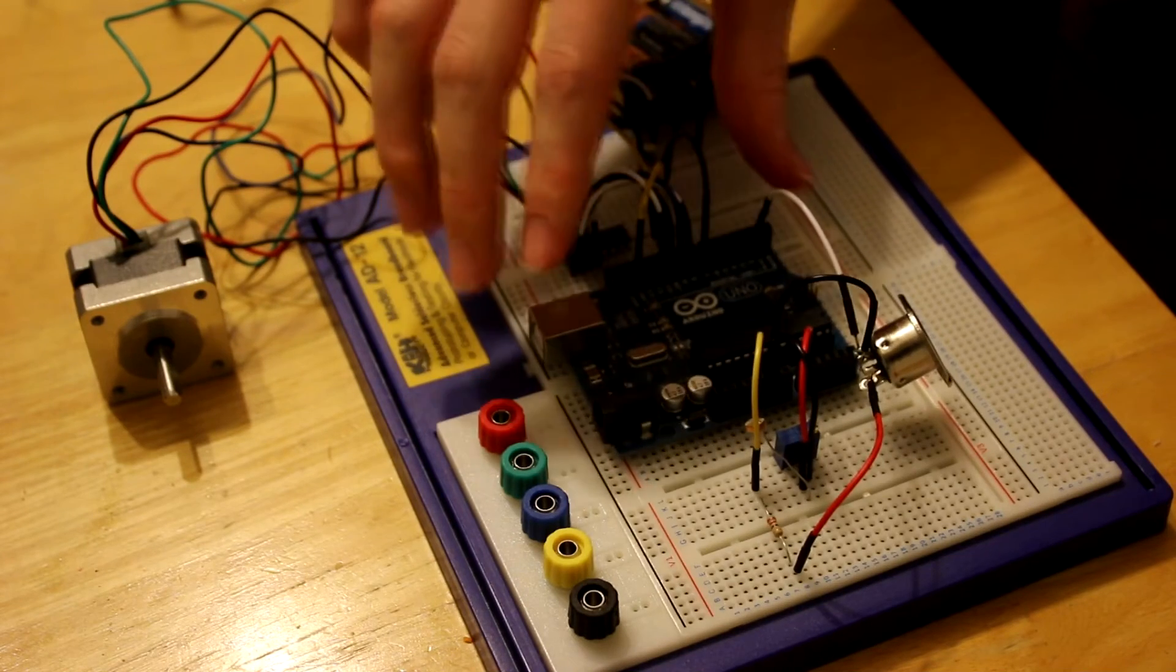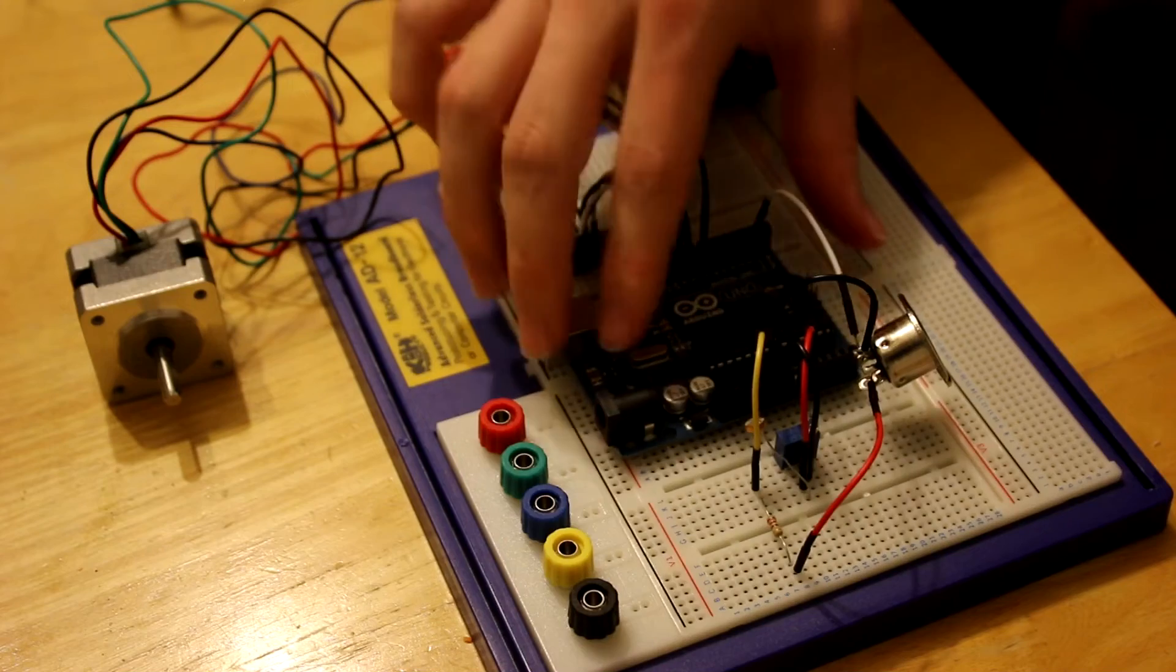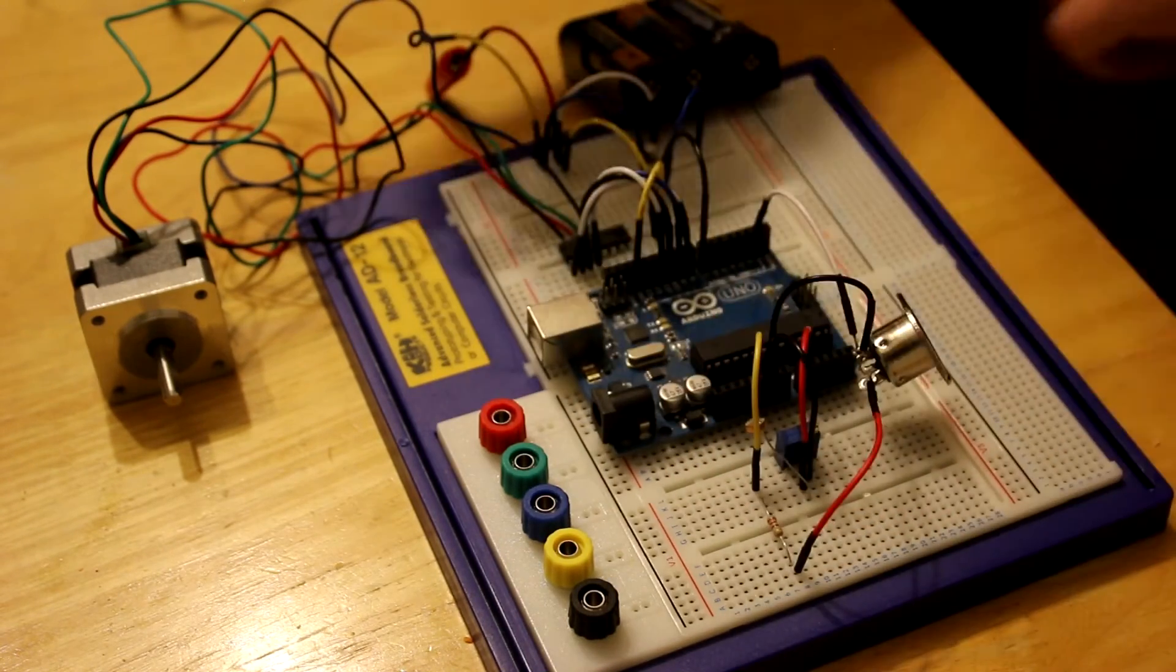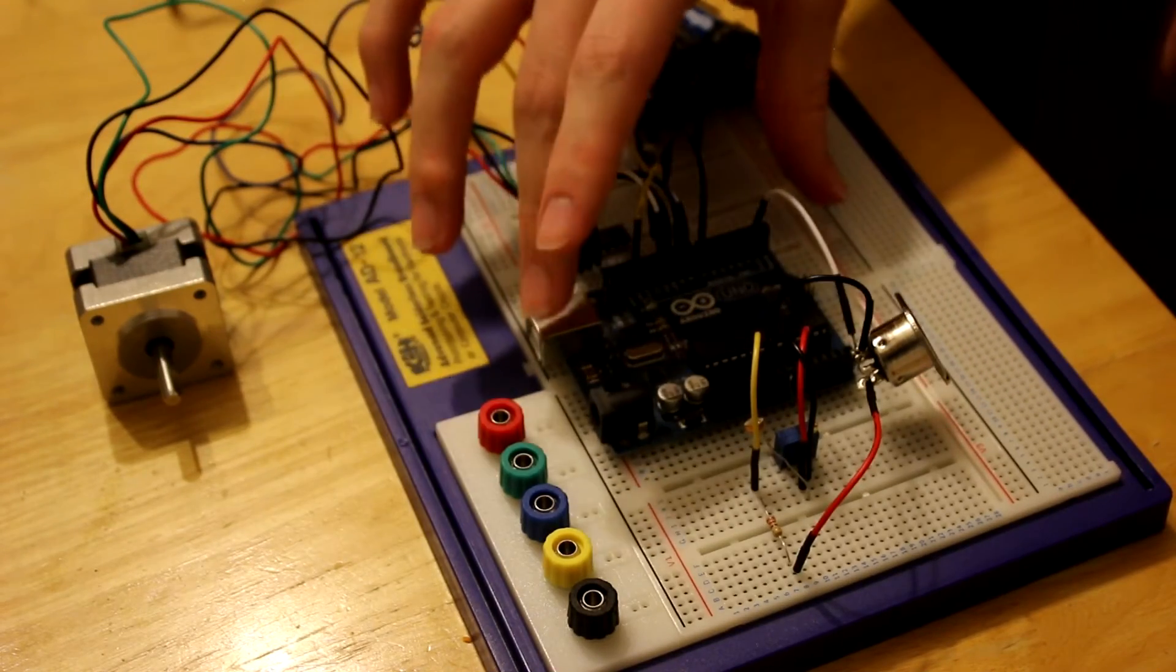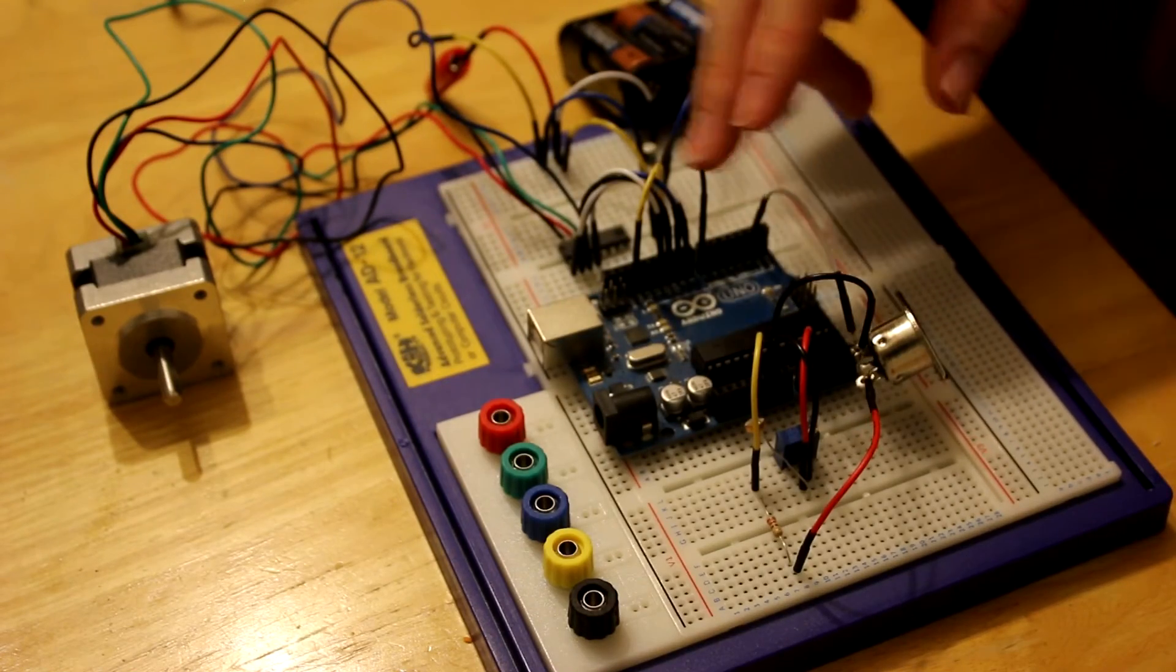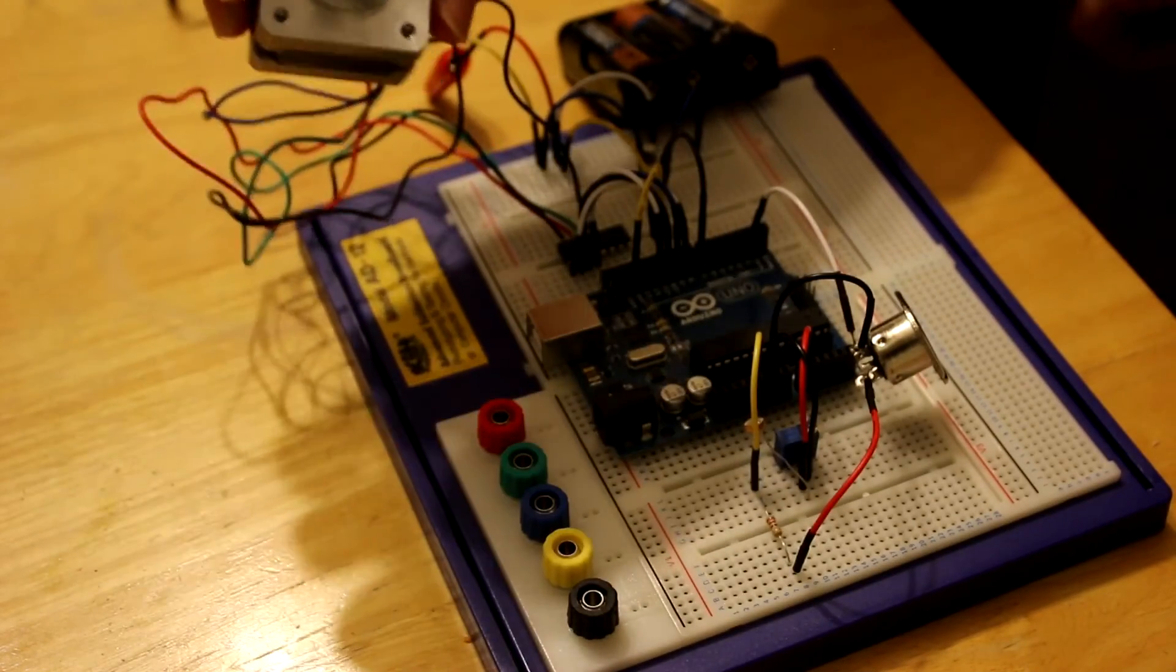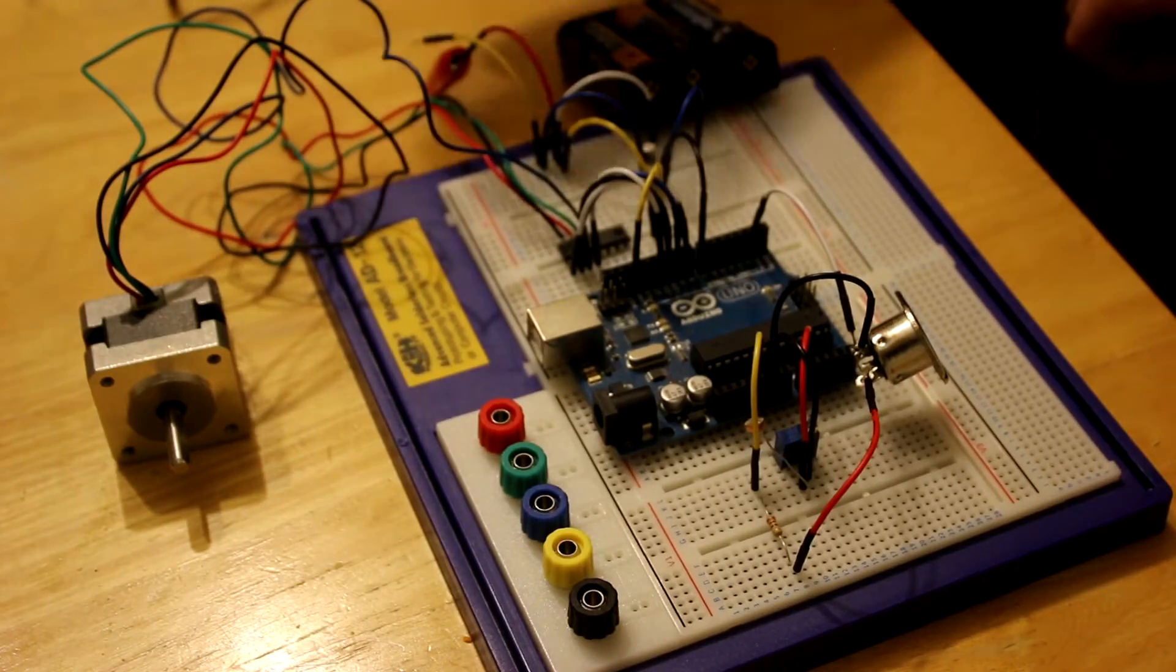Right, so first of all we've got the Arduino Uno microcontroller. This has code already loaded onto it from the computer, which we were able to find online, graciously provided in the Instructable that we used to build this. So what this does is, this controls all of these outputs. The stepper motor, the laser which isn't connected up at the moment.